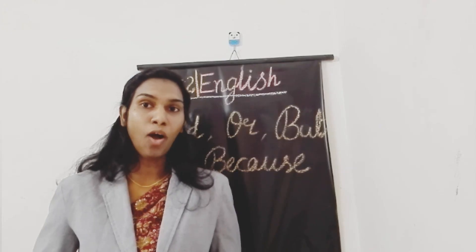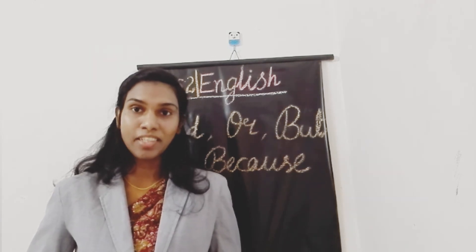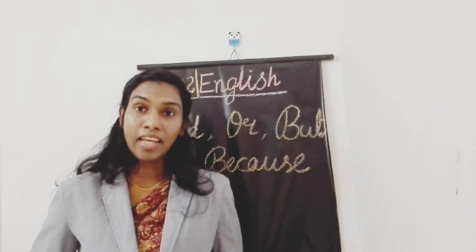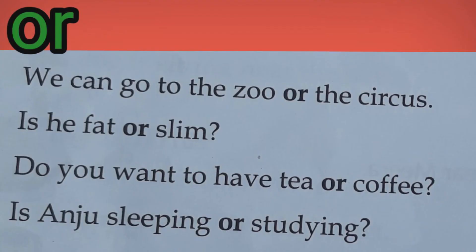Now let's see the use of the word 'or.' The word 'or' is also a connecting word. We use it to suggest there is only one choice — like either one. For example: We can go to the zoo or the circus. You have a choice here: zoo or the circus, anyone. Is he fat or slim? Do you want to have tea or coffee? Even here you can see a choice — I have to choose anyone, so we use the word 'or.' Is Anju sleeping or studying?